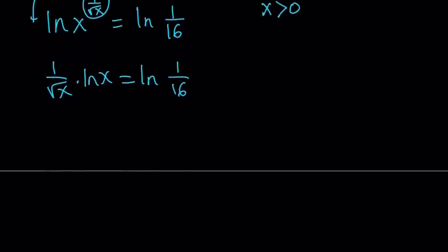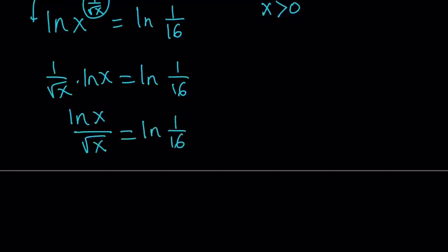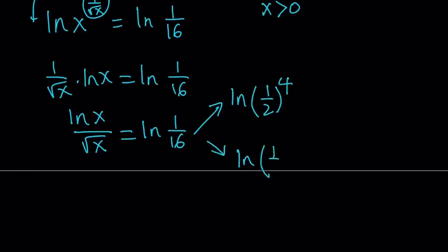Now I can write ln(1/16) in a couple of different ways. Let's first write the left-hand side as a quotient: ln x over square root of x equals ln(1/16). As far as I can see, there are two ways to write ln(1/16) using powers: I can go with ln of (1/2) to the fourth power, or I can go with ln of (1/4) squared.